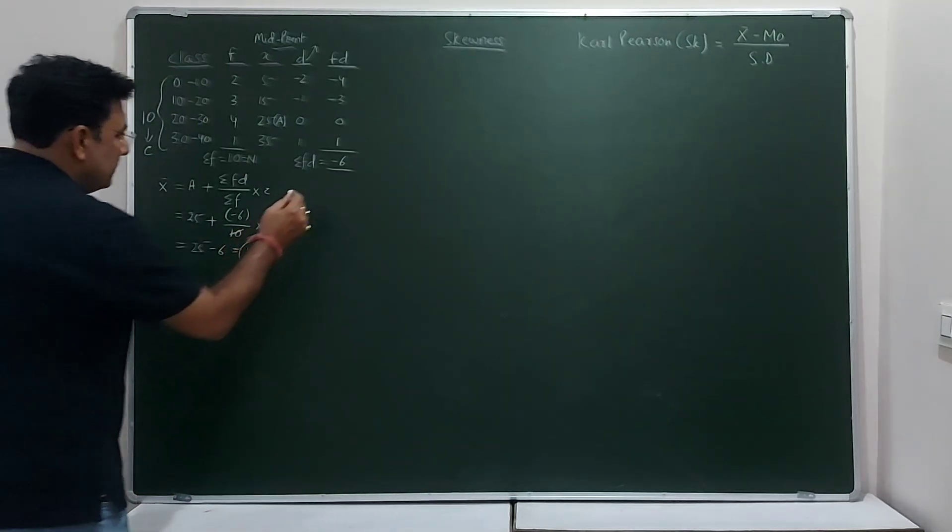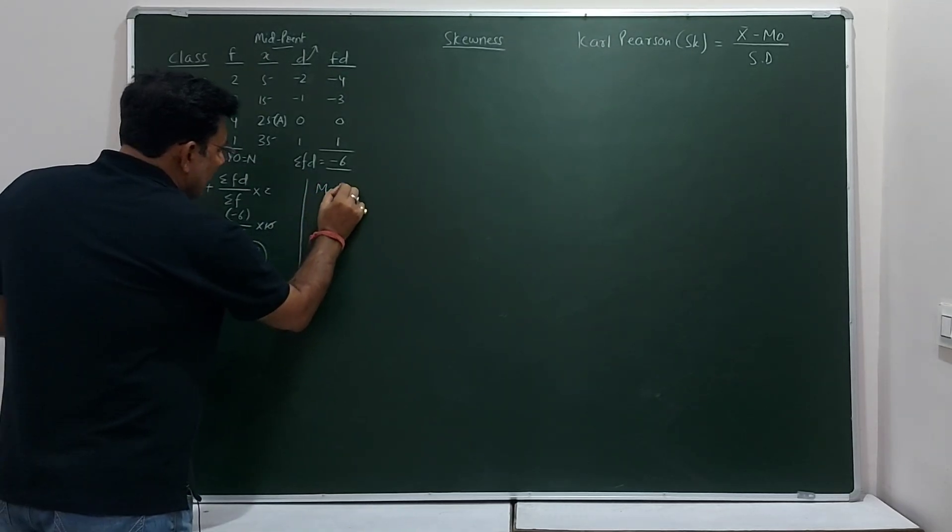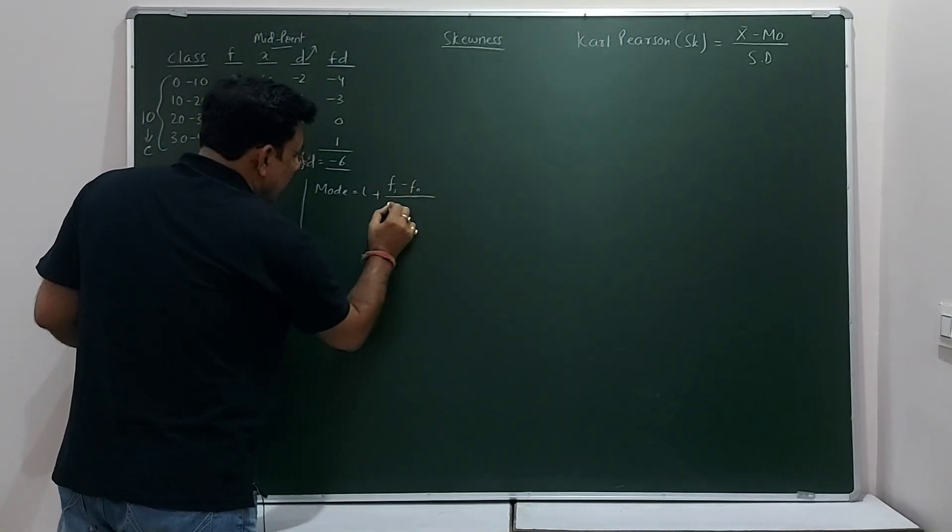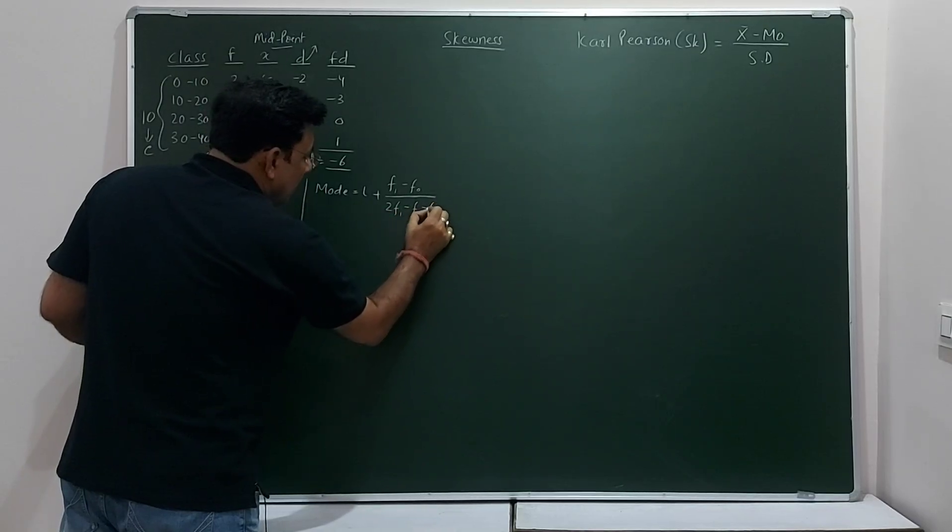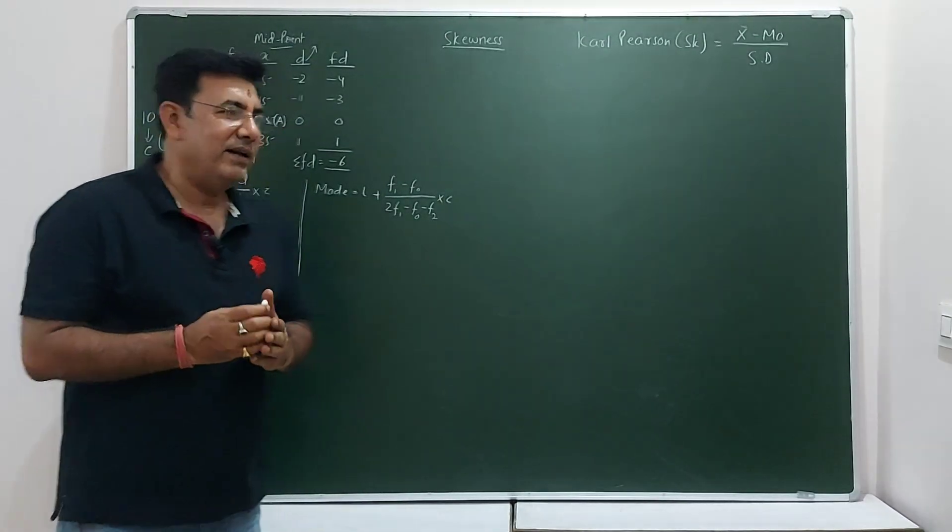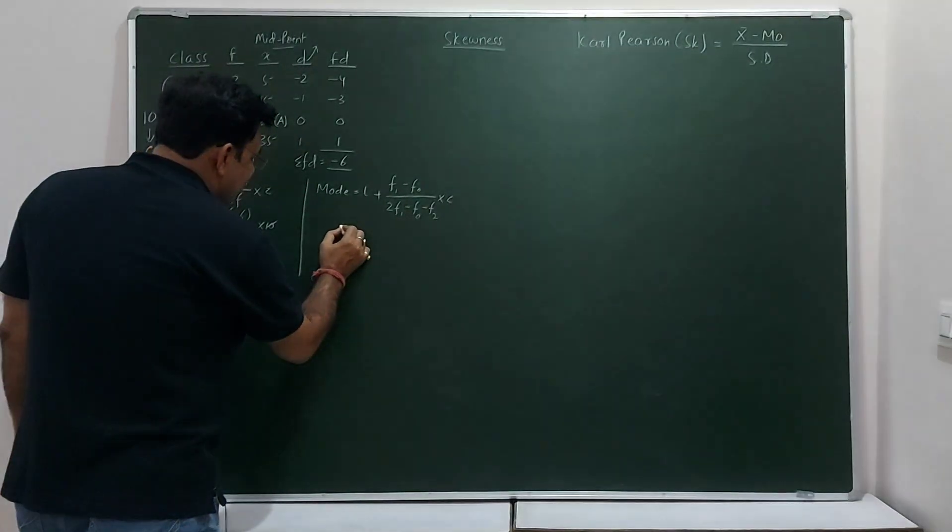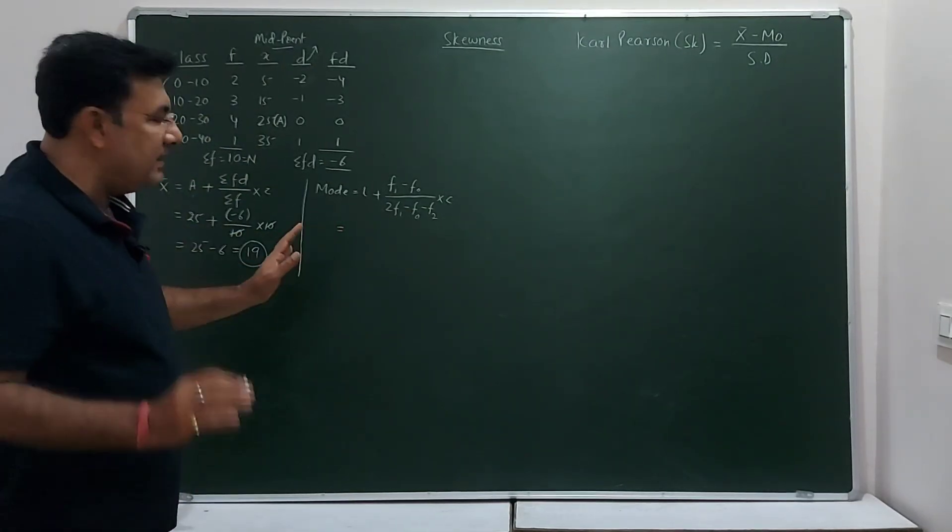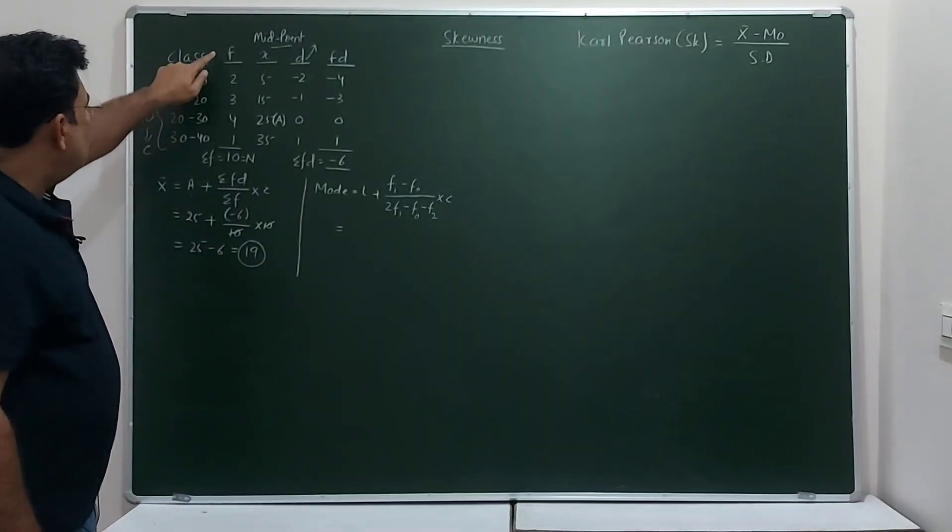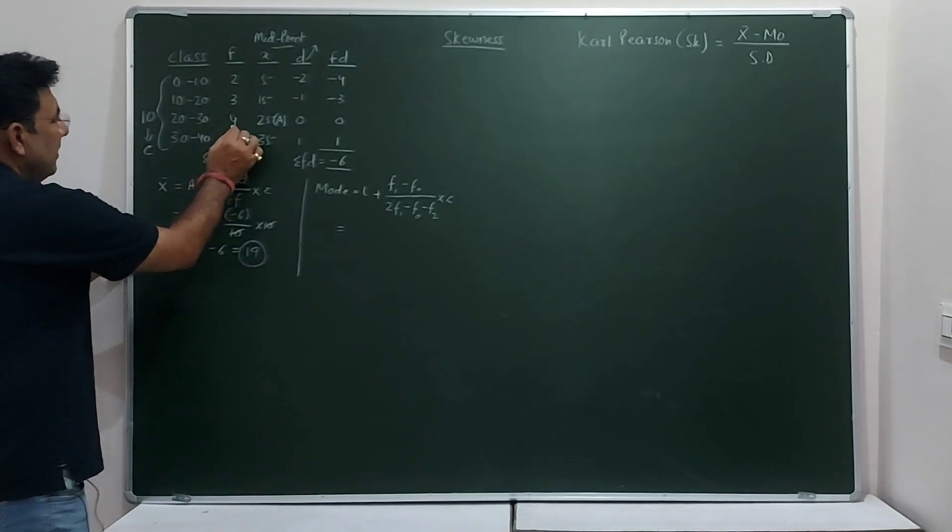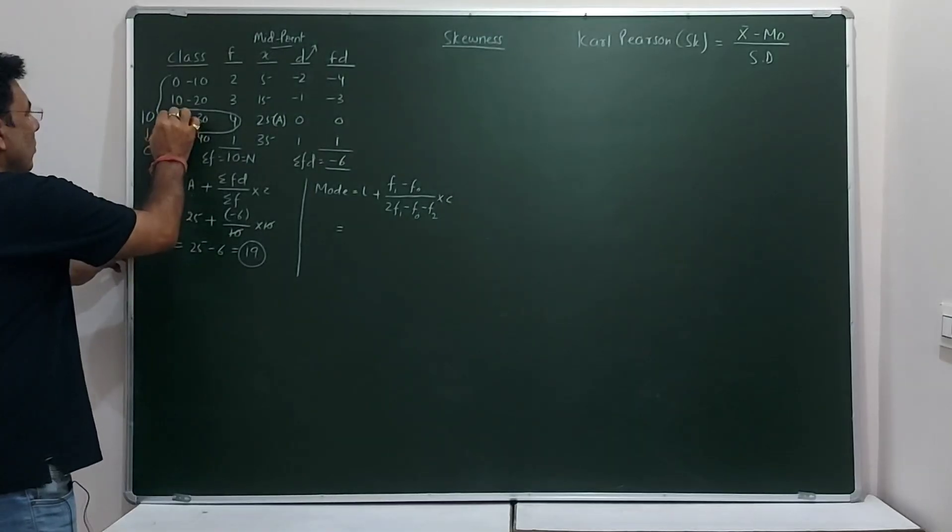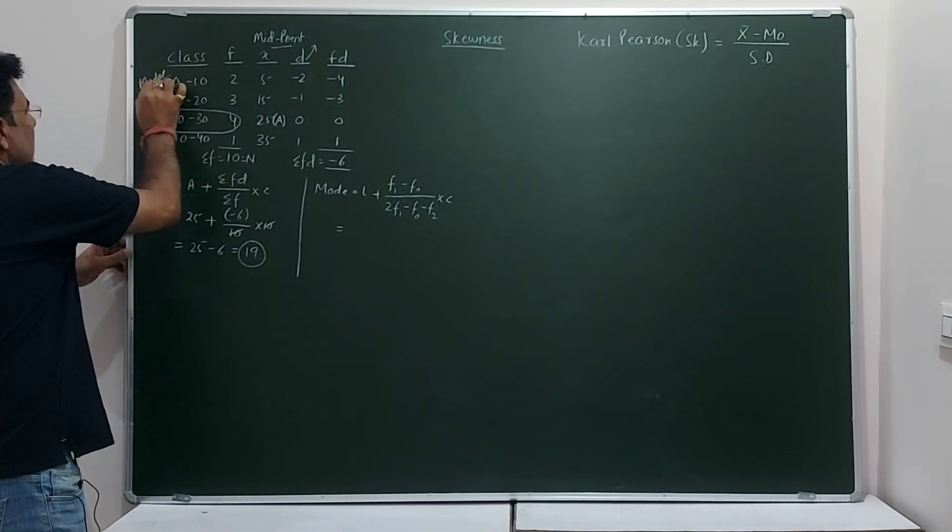Like that, we will find mode. Now, to find mode, we use this formula: L + (F1 - F0)/(2F1 - F0 - F2) × C. This formula looks a bit critical, but doesn't matter. It's not so difficult. We have done this in class 10. Now, to find mode is very simple. You have to decide the class with the largest frequency. Now, see the frequency. There are 4 classes. So, the frequency here, 4 is the highest one. So you will take, you will consider this as modal class. This is called modal class.